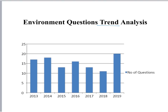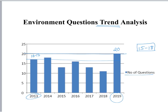If we see the trend and analysis of the number of questions from 2013 till 2019, in 2019 there were 20 questions and in 2013 there were around 16 to 17 questions. On average, around 15 to 18 questions are always focused upon the environment section, amounting to around 36 marks out of 200. This shows the importance of the environment section, and it will play a pivotal role for both the forest and civil services examinations.